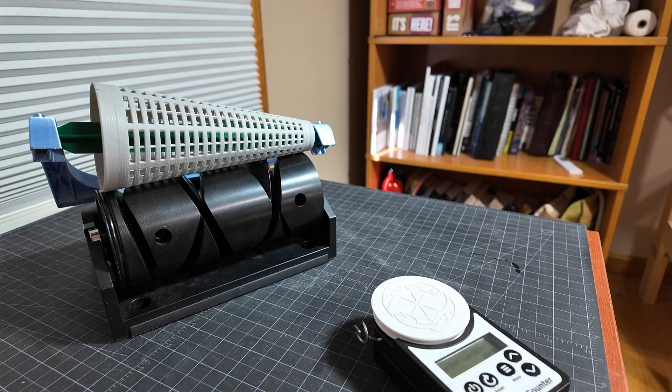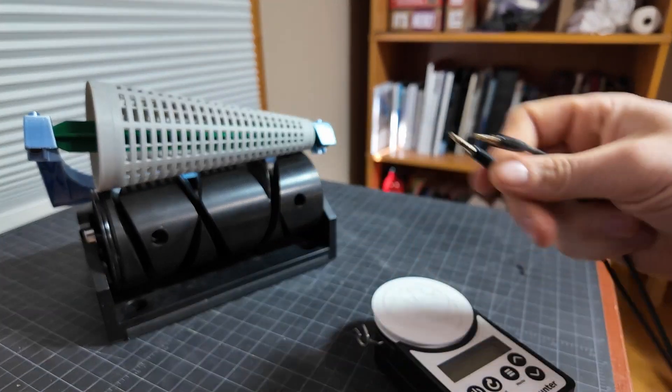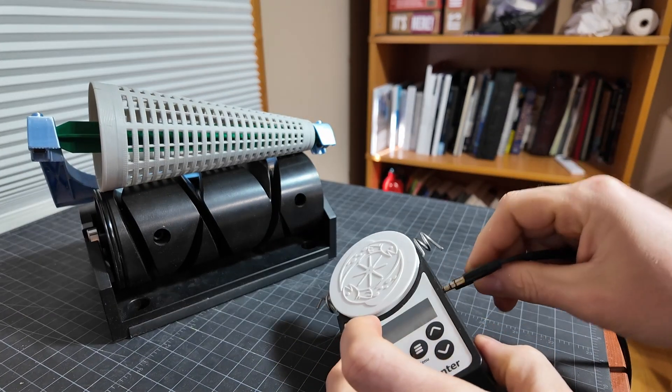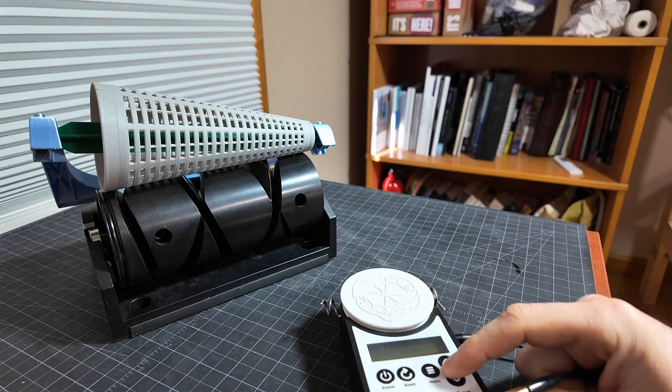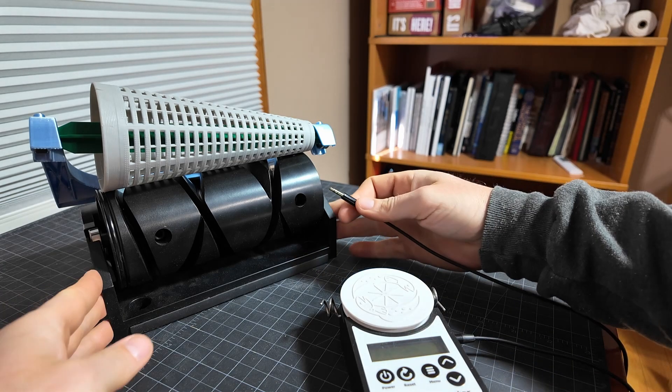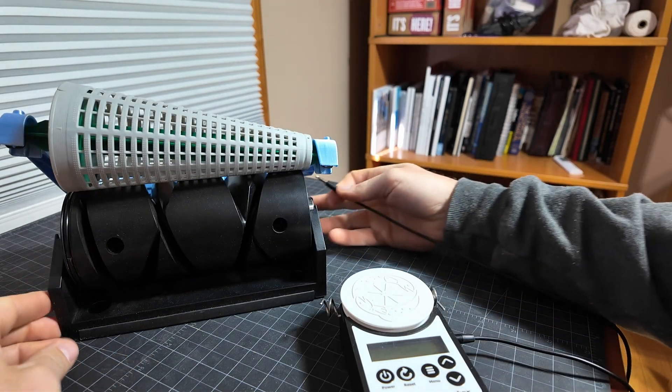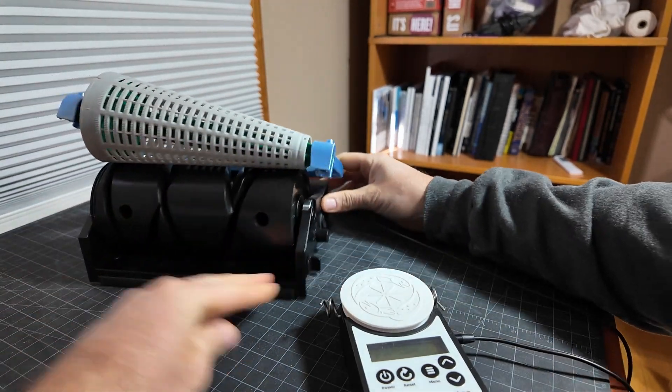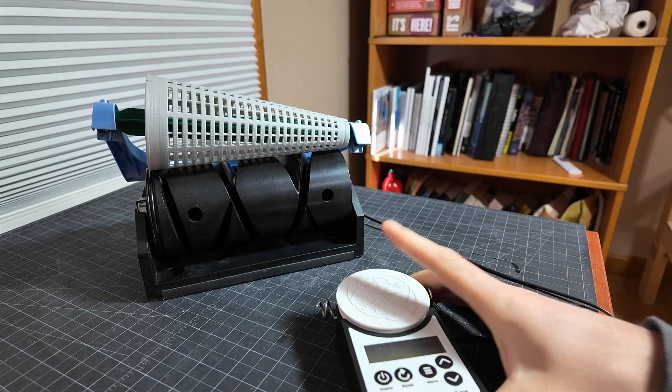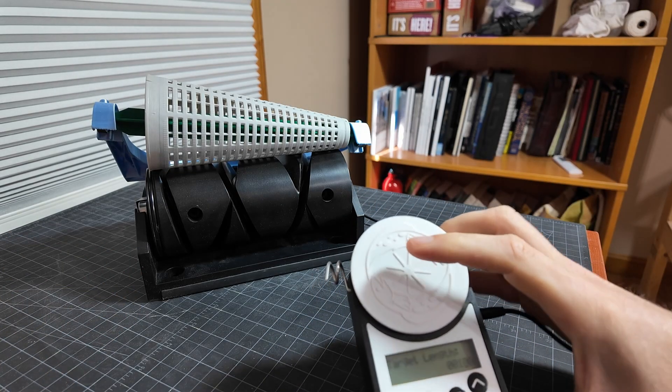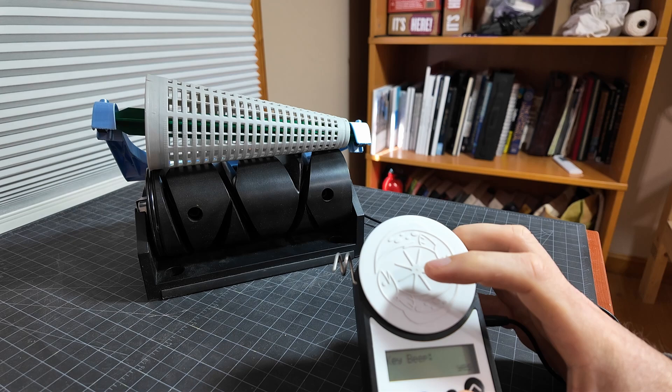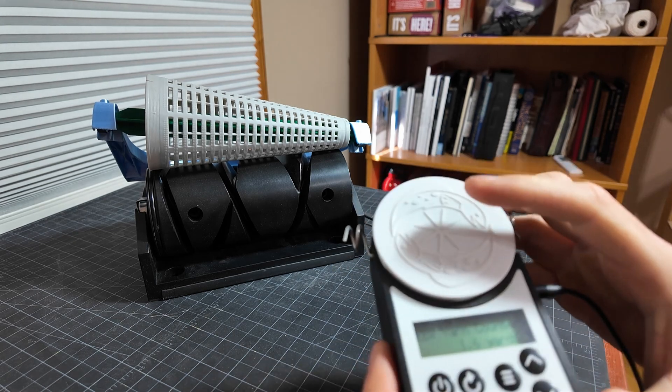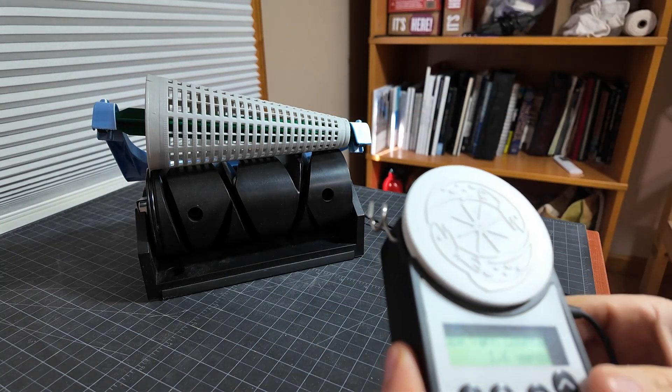So that port is just a standard 3.5 millimeter stereo jack. So you plug that in, and I made the yarn counter first, but after I was done making the yarn counter, I made a cone winder, and the cone winder does have a port for this. So you plug that into the cone winder, and now when the yarn counter reaches 100 yards, the cone winder would turn off.